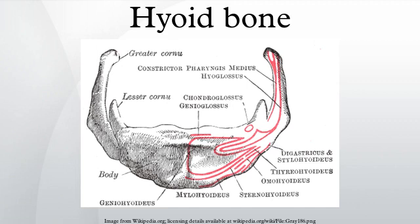The hyoid bone is a horseshoe-shaped bone situated in the anterior midline of the neck between the chin and the thyroid cartilage. At rest, it lies at the level of the base of the mandible in the front and the third cervical vertebra behind.